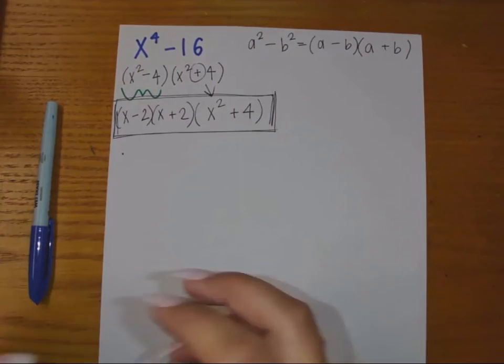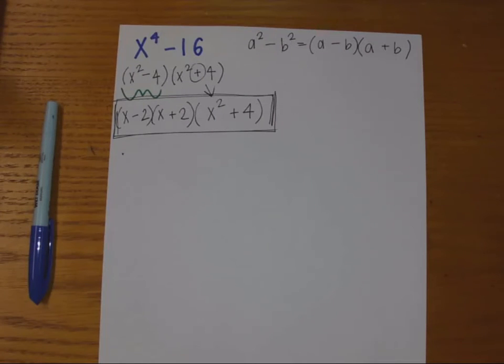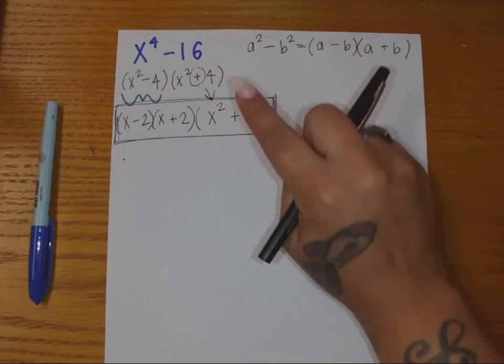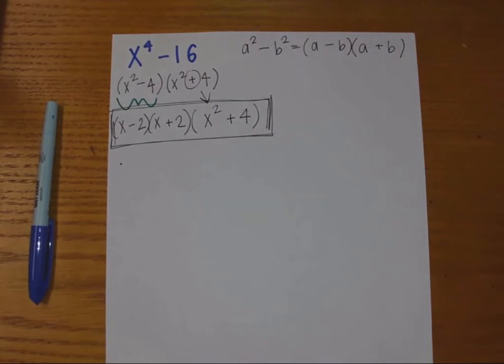Right there. So X minus 2 times X plus 2 times X squared plus 4 is this binomial completely factored. Good, okay.